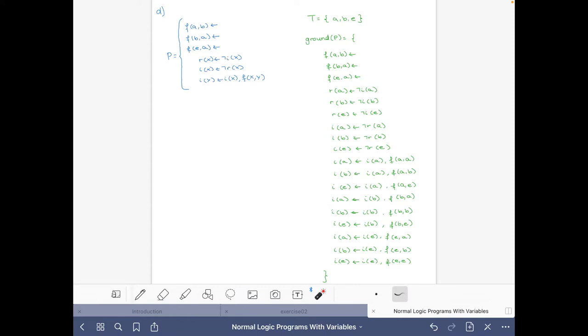Good, so this is the ground instantiation of the program. Then let's move on and try to find the stable models of this program. Just looking at this program, first we can see that any stable model will have these three atoms. So let's write already here: f equals f(a,b)...